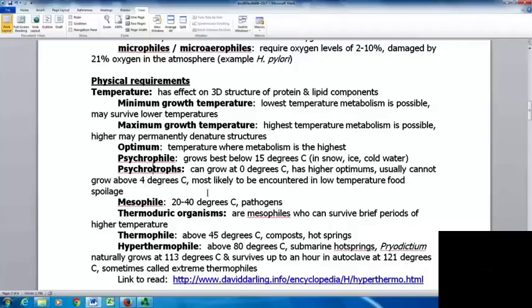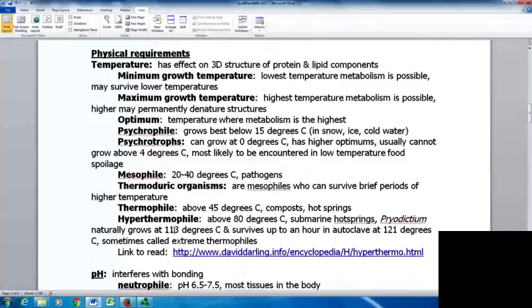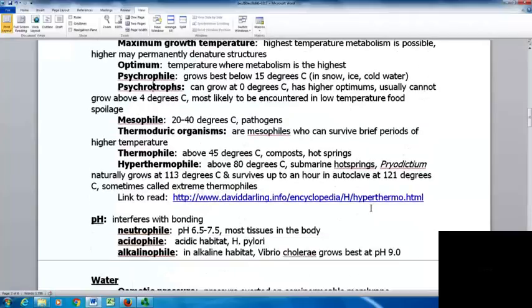Psychrotrophs can grow at 0 degrees Celsius, may have higher optimums, usually cannot grow above 4 degrees. You're most likely to encounter these in low temperature food spoilage - why food in the refrigerator can still spoil. Mesophiles like 20 to 40 degrees Celsius - where most pathogens are, also the temperature range the human body falls in. Thermoduric organisms are mesophiles who can survive brief periods of higher temperature - why briefly heating things wouldn't necessarily kill all pathogens. Thermophiles live above 45 degrees Celsius in compost and hot springs, important in breaking down sewage.